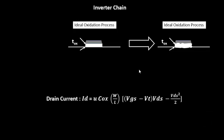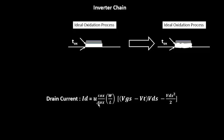In the drain current equation, Id = µ·Cox·(W/L), the oxide capacitance Cox is directly dependent on the oxide thickness. So the drain current is directly impacted by the oxide thickness — the more the oxide thickness variation, the more the Id variation, which in turn affects the propagation delay.